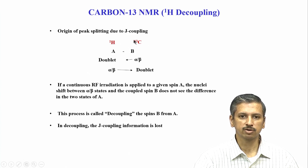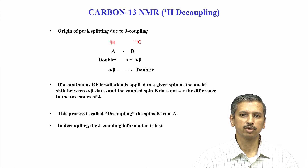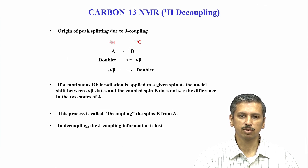Decoupling can also be applied between carbon-13 and nitrogen, or between two carbon-13 nuclei, as we will see in the biomolecular section. This brings us to the end of 1D NMR spectroscopy. We will now move on to 2D NMR and see how homonuclear and heteronuclear 2D NMR experiments are conducted and analyzed.